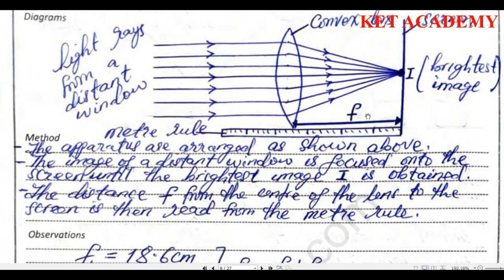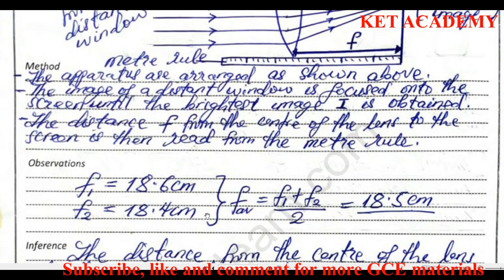You put your light source at one end, or use a window, or if provided a candle as a light source. Then move your convex lens along the metal ruler until you note the brightest image. Stop there, read the measurement, and do that two or three times.